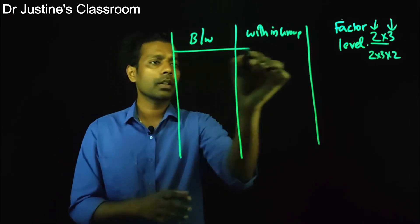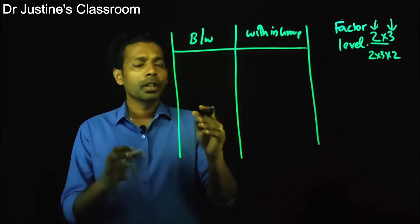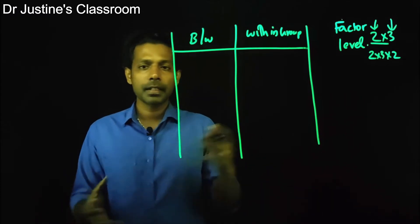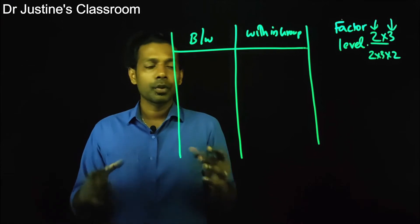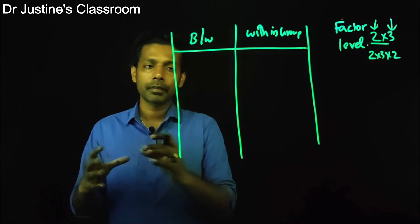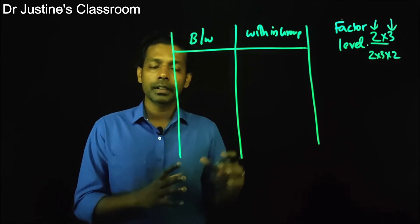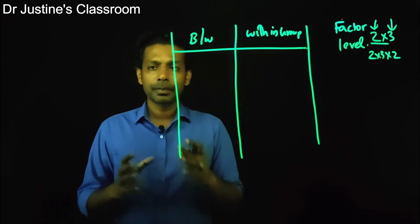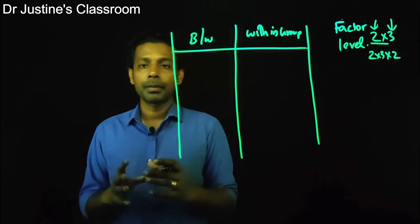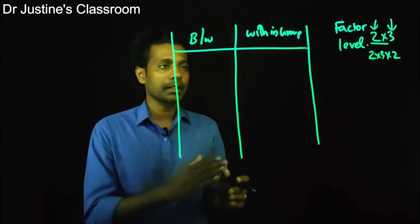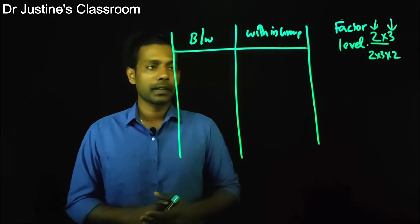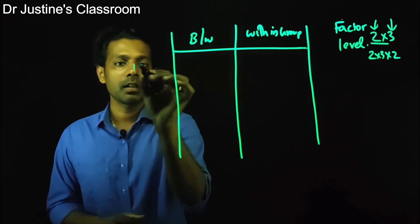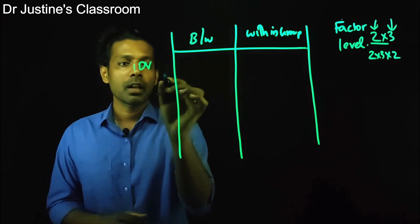Between-group design means you have independent groups — for example, male, female, and transgender, or a group undergoing one treatment, another group undergoing a different treatment, and a third group undergoing yet another treatment. Within-group design means the same group members across conditions — like pretest, posttest, and follow-up, or condition one, condition two, condition three.